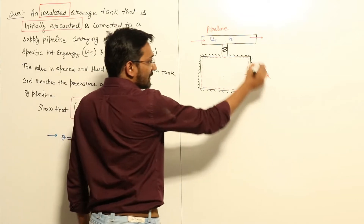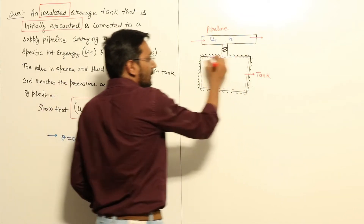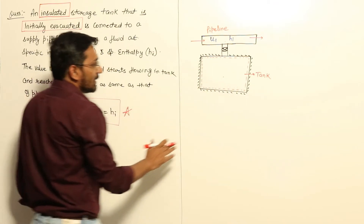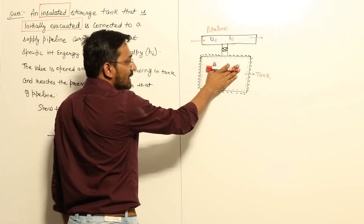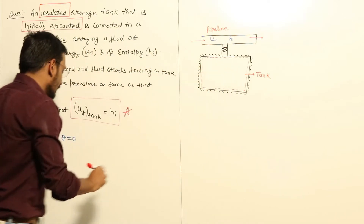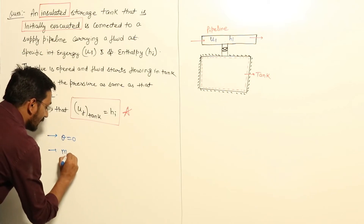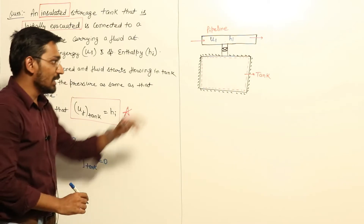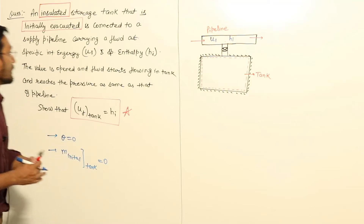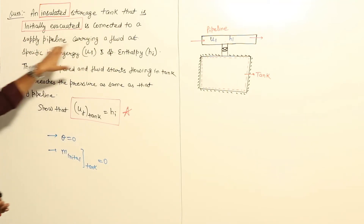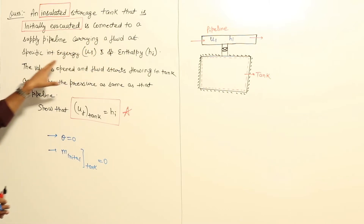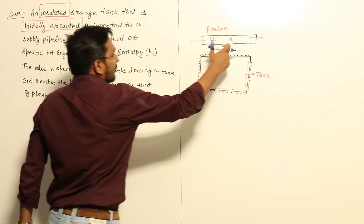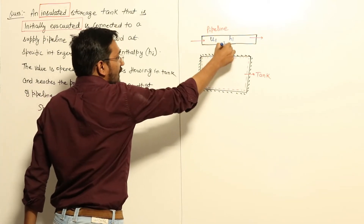The tank is insulated as given in the question, so I draw a control volume with a red dotted line as the boundary. Initially, the question states there is no mass in the tank — it is evacuated — so the initial mass in the control volume is zero. Now the valve is opened and fluid starts flowing into the tank.